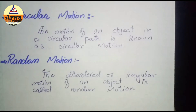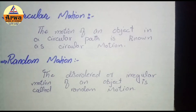Agar object ka motion circular path mein hai — ek circle hai aur us circle mein jo object hai wo move kar raha hai — to uska motion circular path mein hai, aur use hum kahenge ki iska circular motion hai.